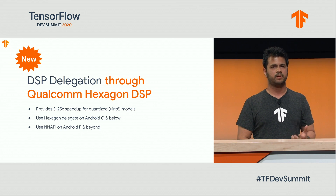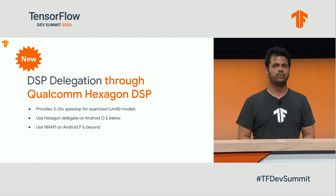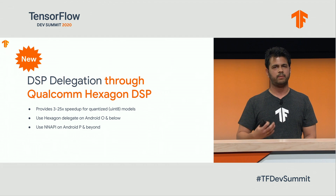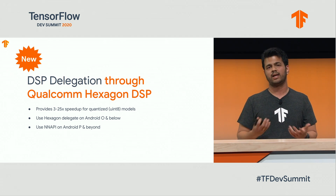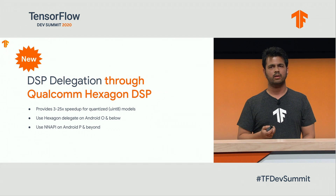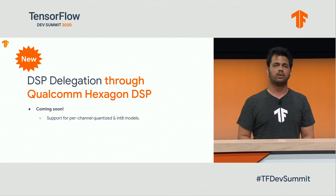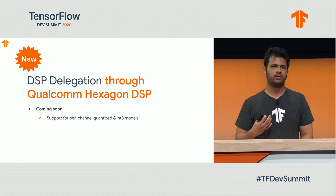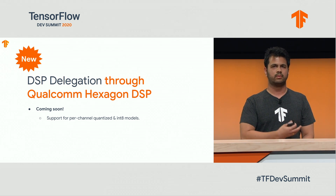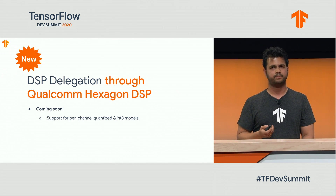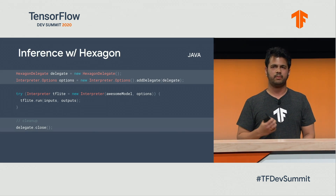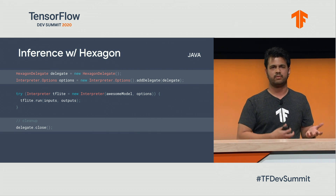This delegate provides up to 25x speedup for quantized Uint8 models. Our general directive is to use this delegate on Android O and below and use NNAPI delegate on Android P and above, or in environments where you may not have the Android operating system. We are working with Qualcomm to add support for models which are per-channel quantized, so you can make use of our post-training quantization tooling to run those same models with the Hexagon delegate. The inference setup is pretty similar; the only difference is that you initialize the Hexagon delegate instead of the GPU delegate object.